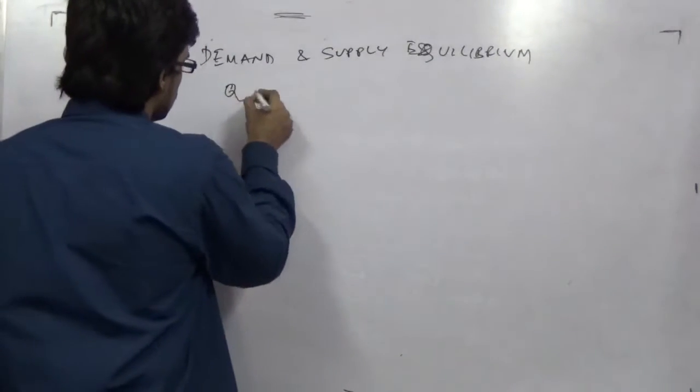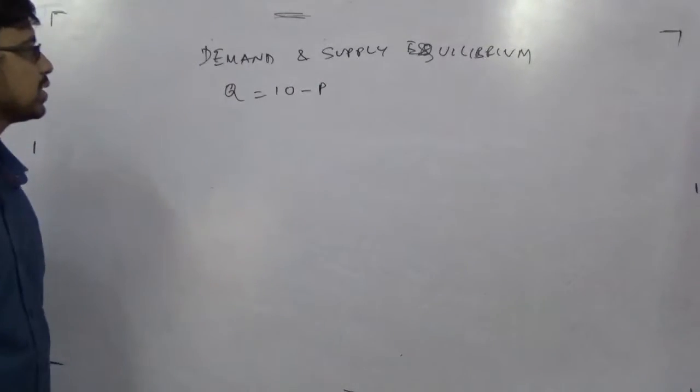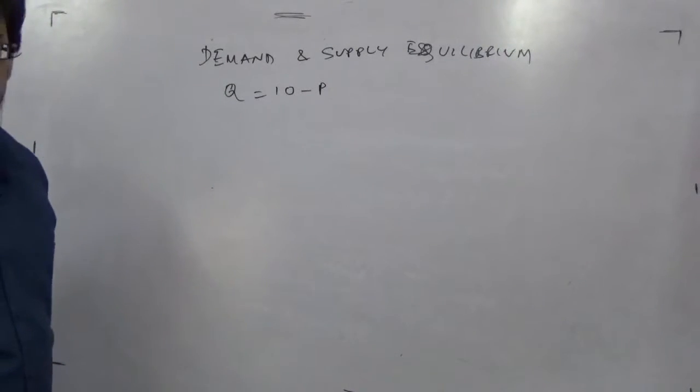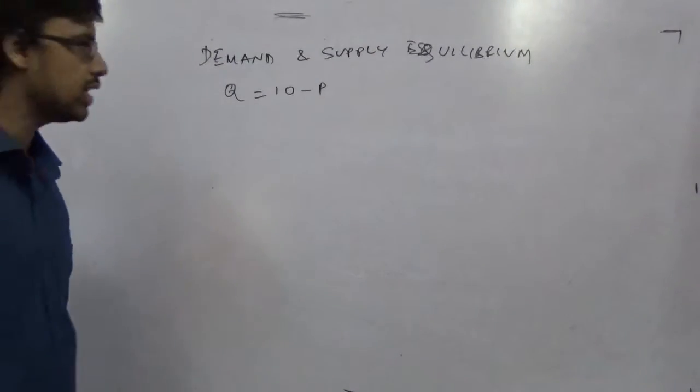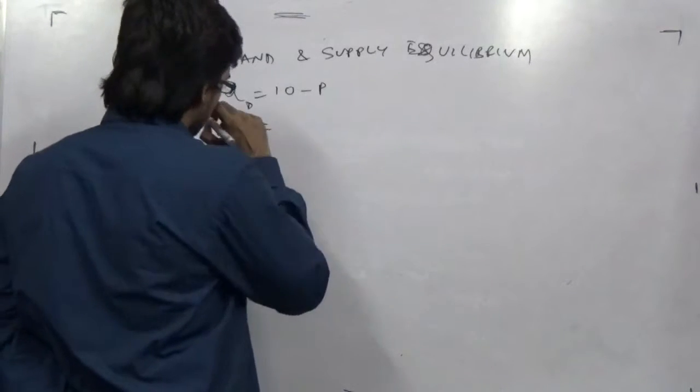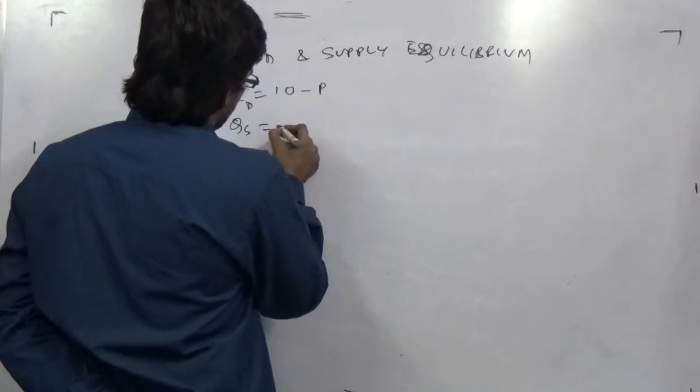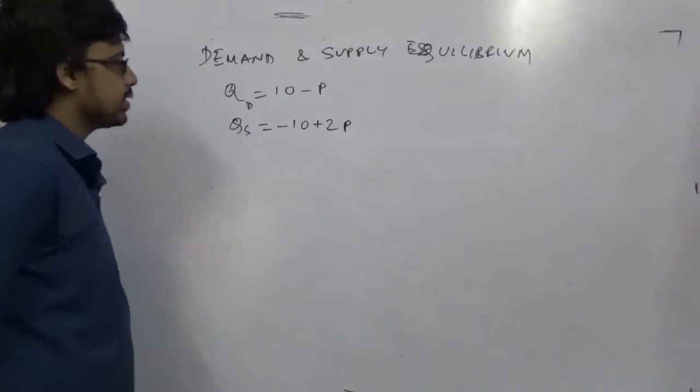For example, q equals 10 minus p. From this, we can say that it is a demand curve because p and q are on two sides and they have separate sides. This is called the demand function qd, and q is equal to minus 10 plus 2p. This is the supply.